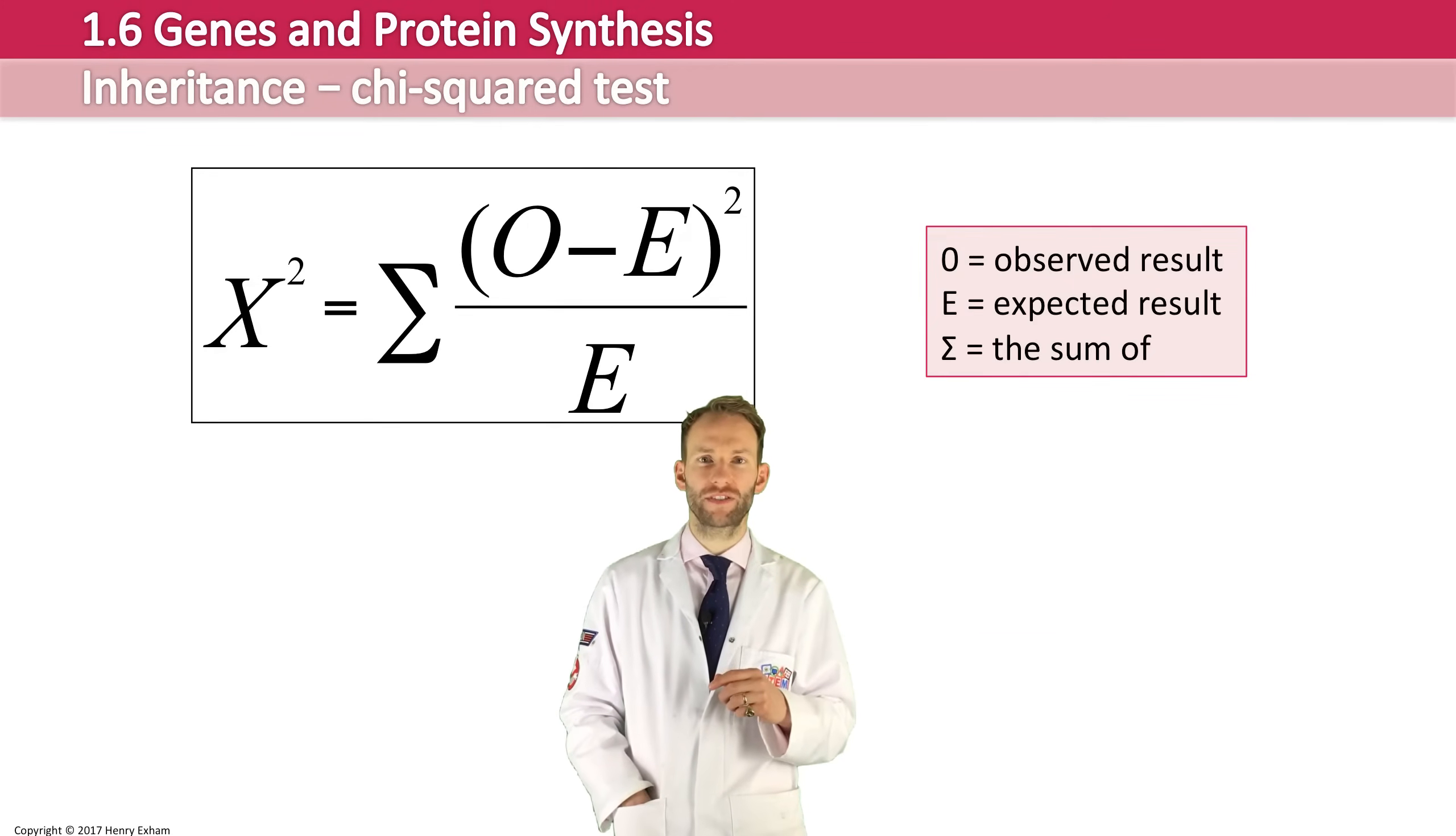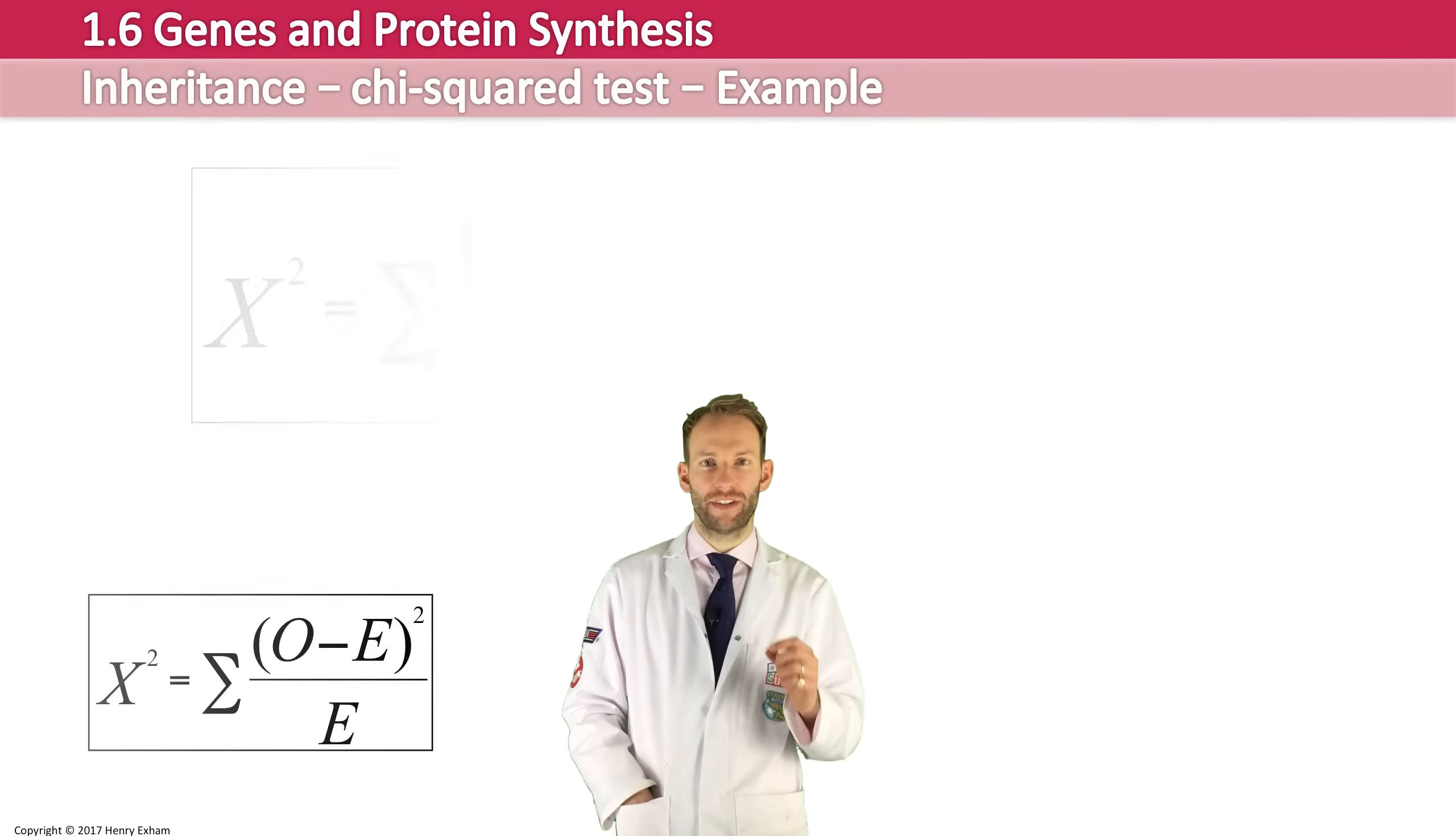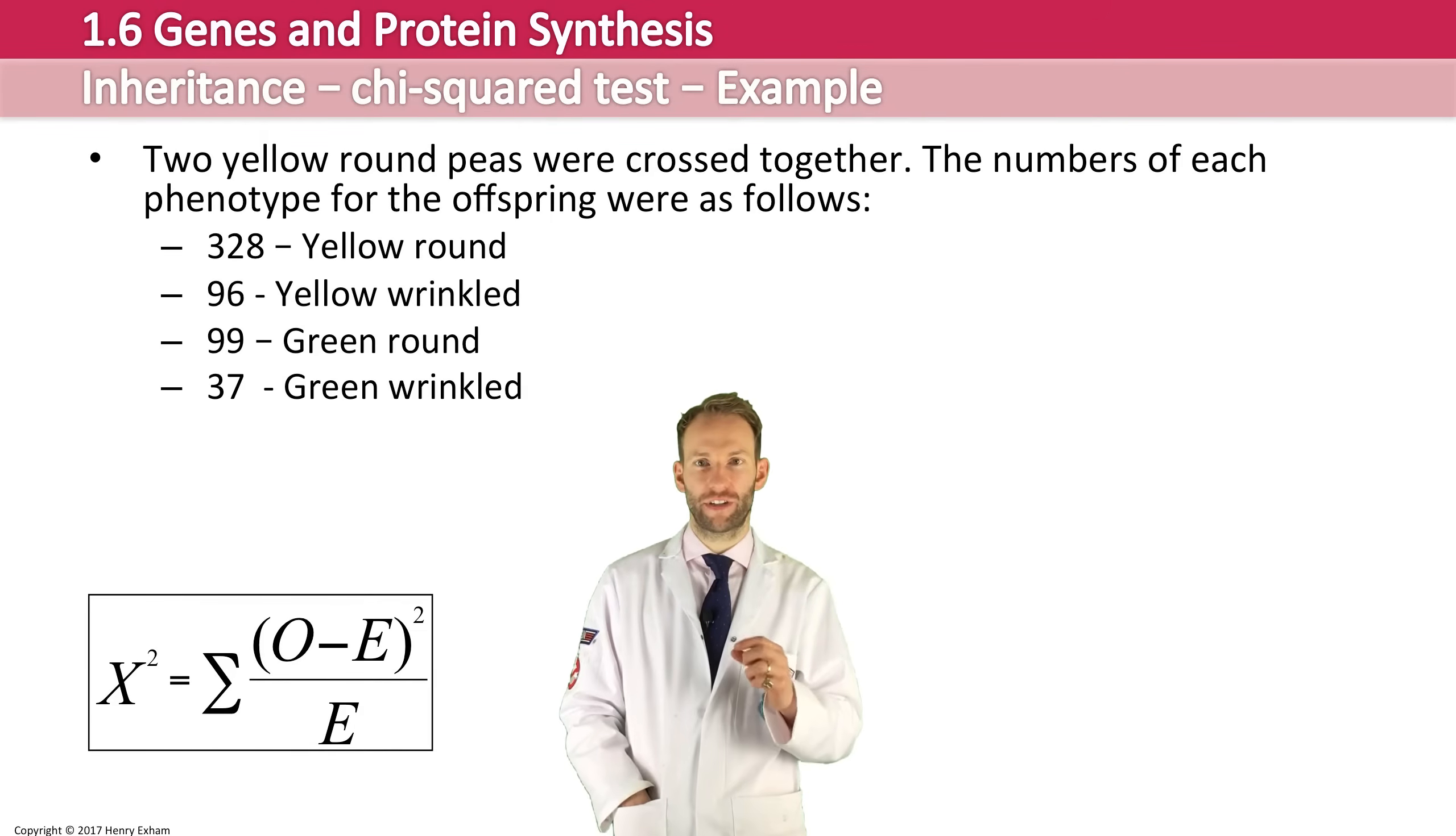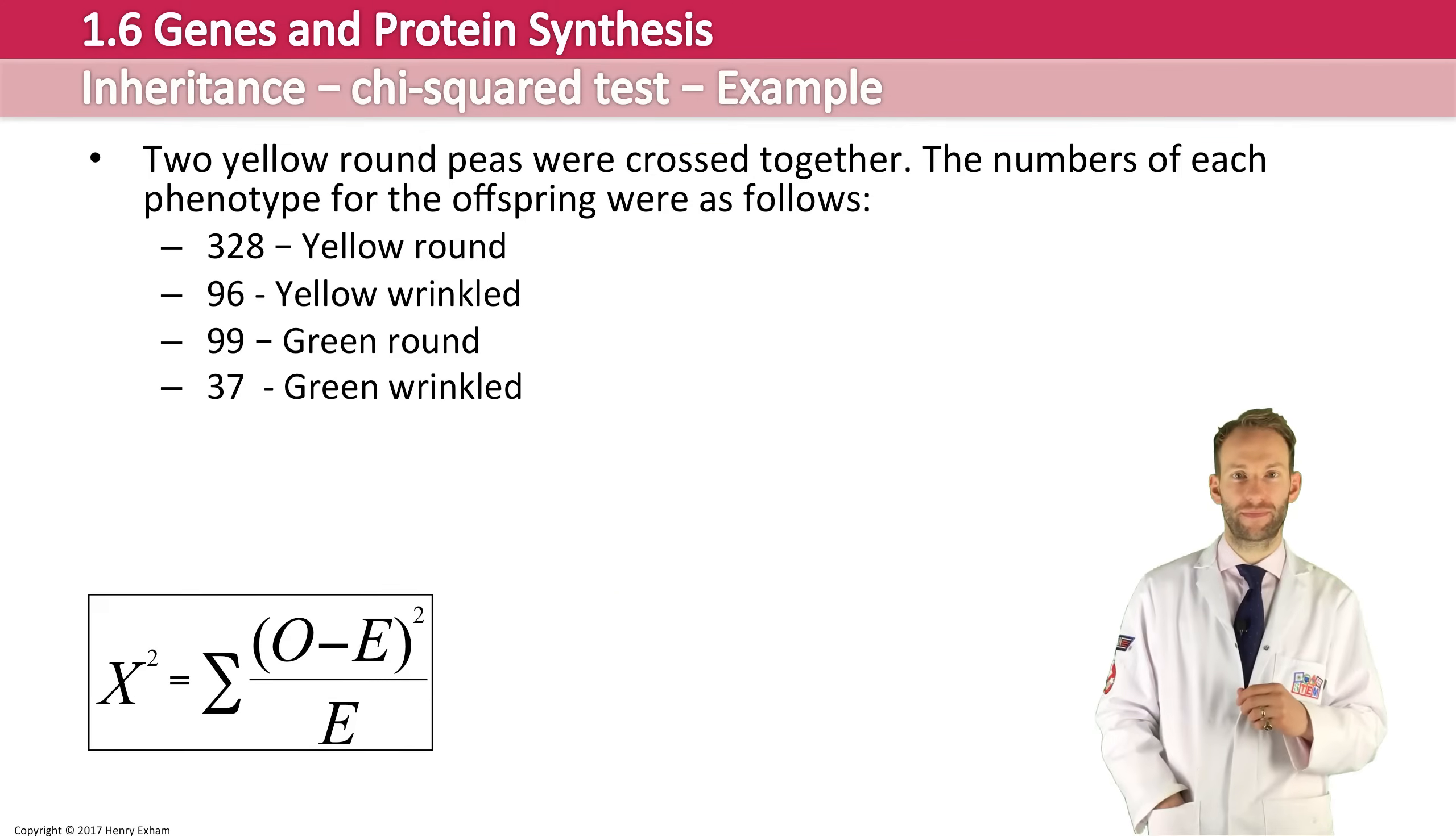Okay, so here's the example we'll look at. Two yellow round peas were crossed together. The numbers of each genotype for the offspring were as follows. There were 328 yellow round, 96 yellow wrinkled, 99 green round, and 37 green wrinkled.